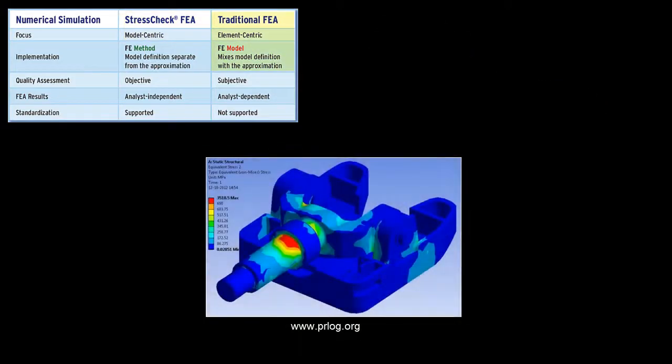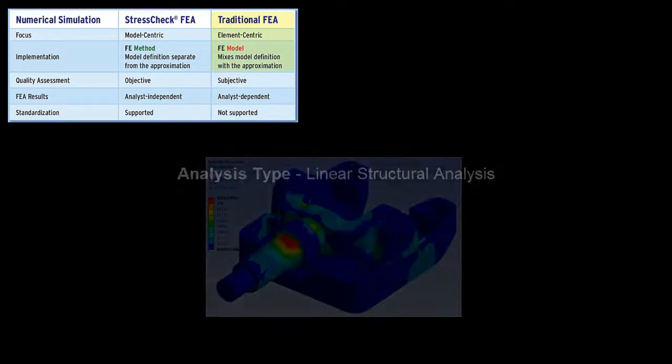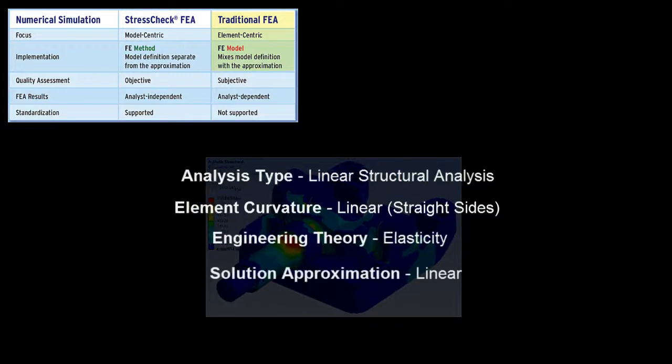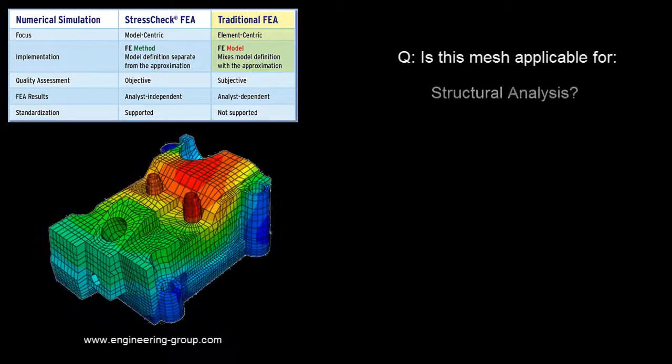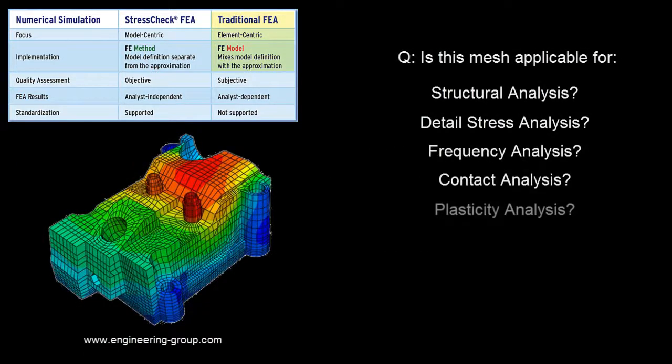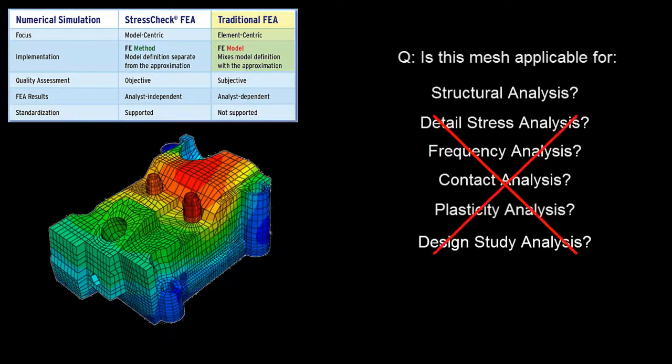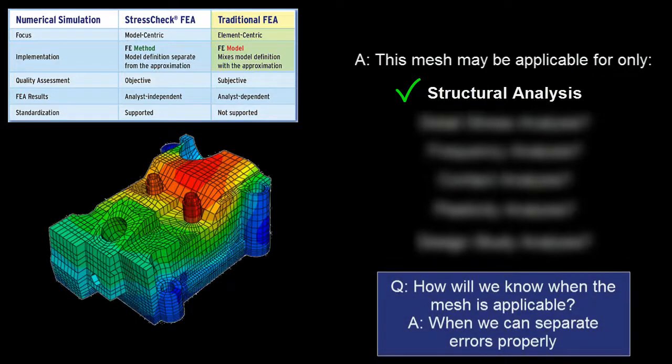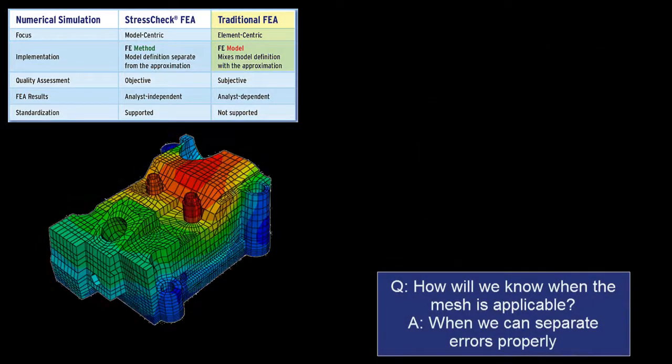The implementation of traditional FEA packages requires that the analysis type, curvature, theory, and solution approximation be lumped into an element definition, like this four-noded linear elastic element. This means that if a different analysis or theory is required for a particular simulation, the element types must be replaced and or a remesh must occur. This places unnecessary burden on an engineer to efficiently model changing scenarios.